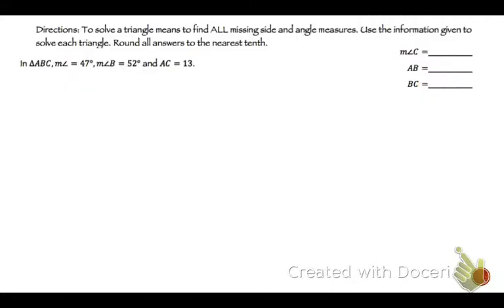Now get into the little bit more tricky stuff. So we're going to solve for a triangle, and we have to find all the missing sides and angles. We have to use the information given and round to the nearest tenth. We don't know the triangle yet, so anytime you don't have a triangle, if they don't give you a triangle, you draw the triangle.